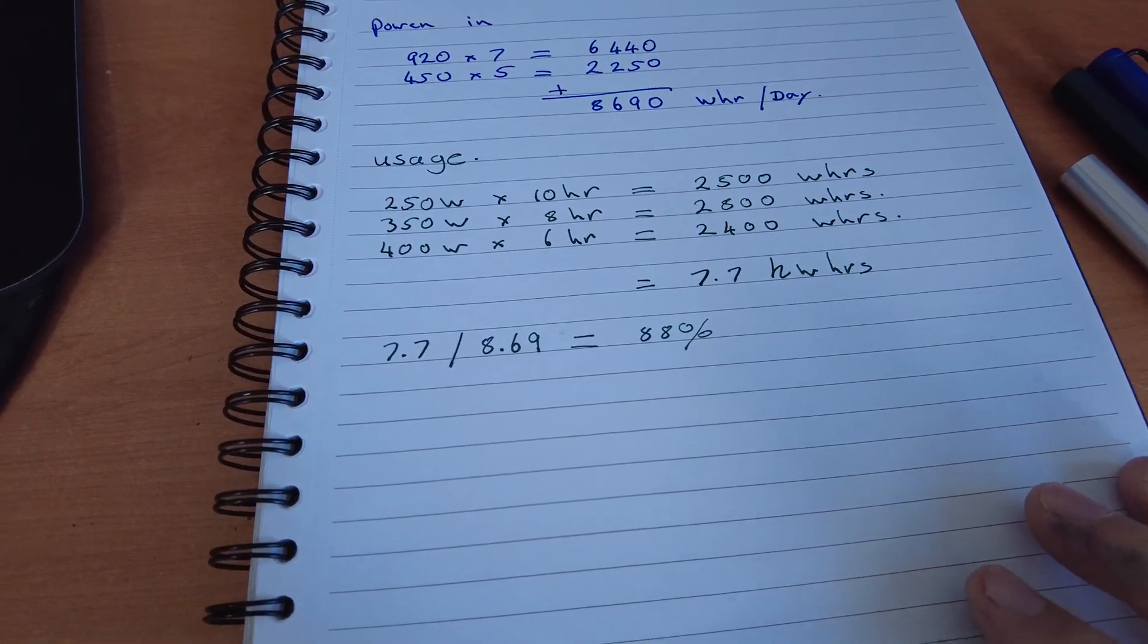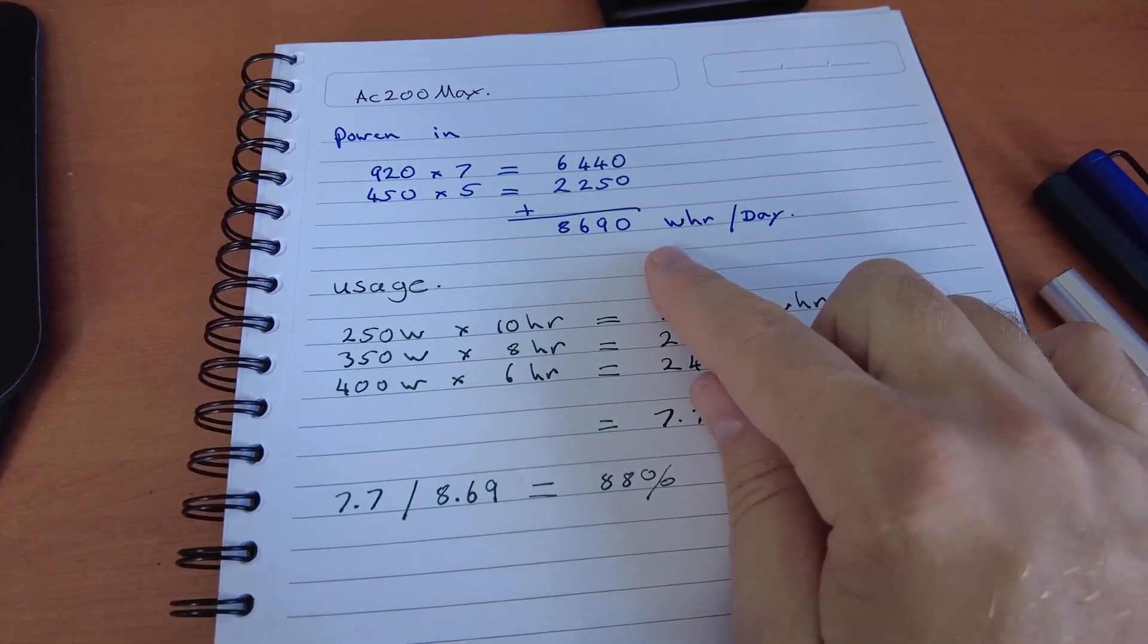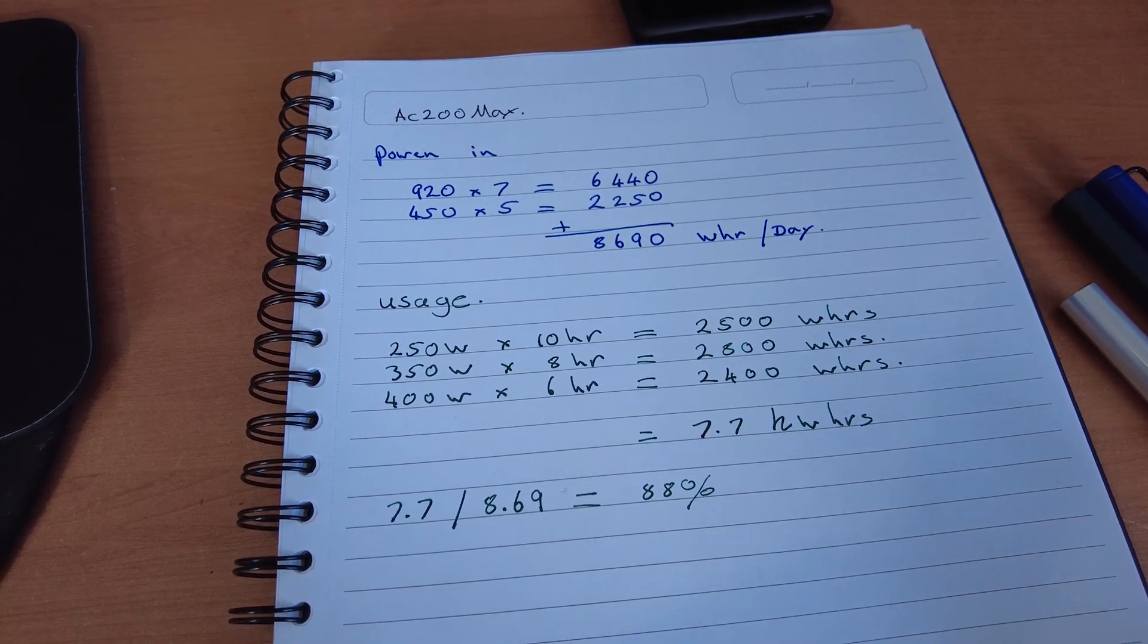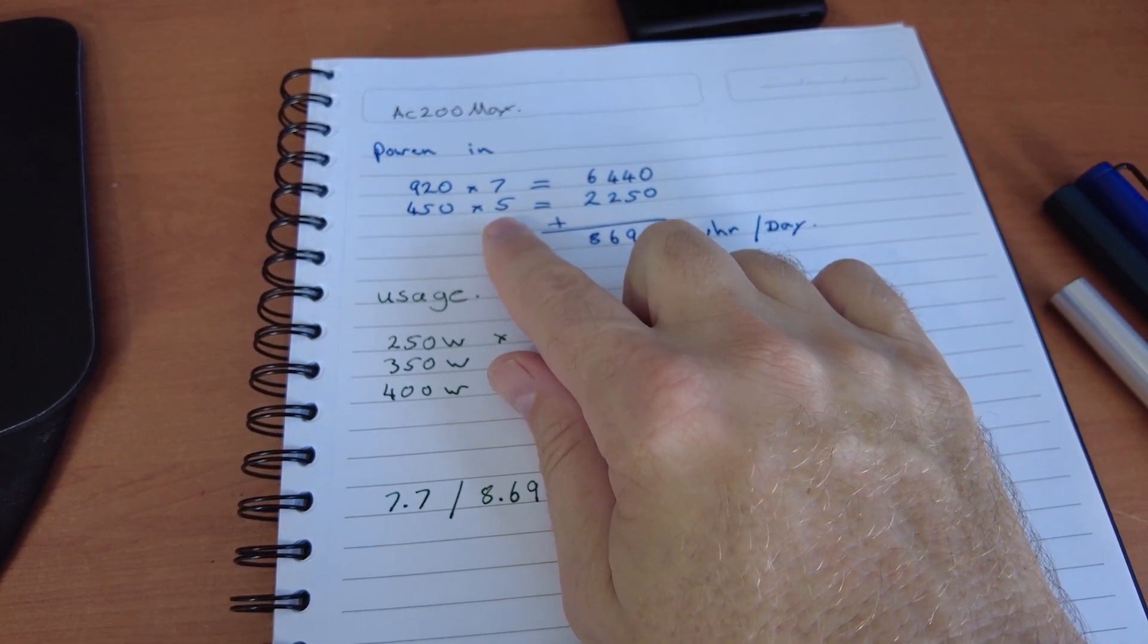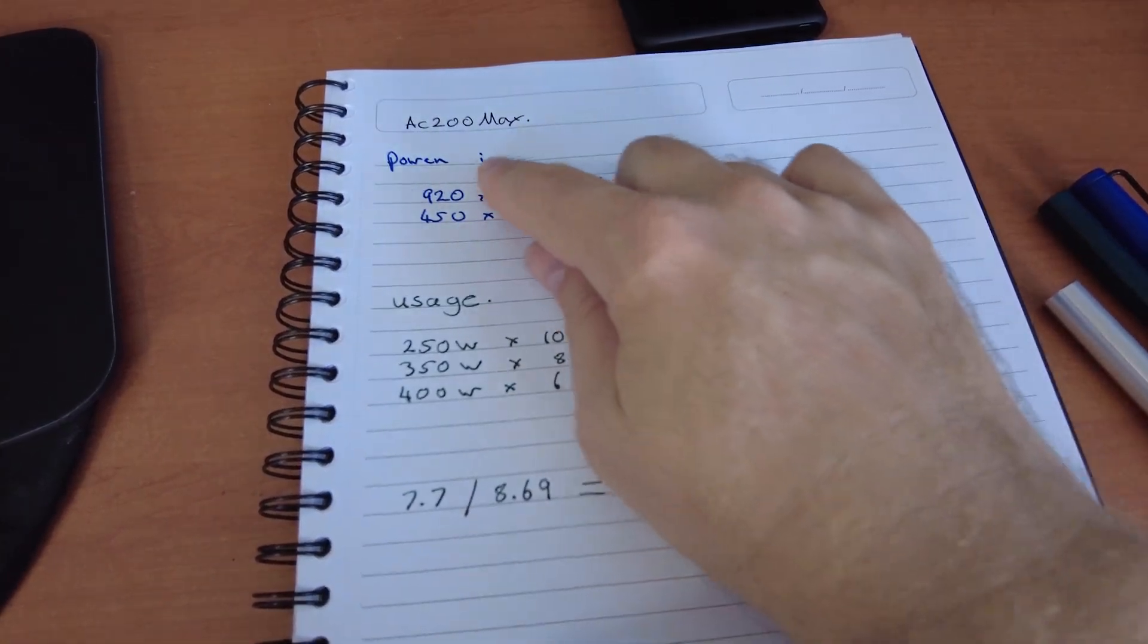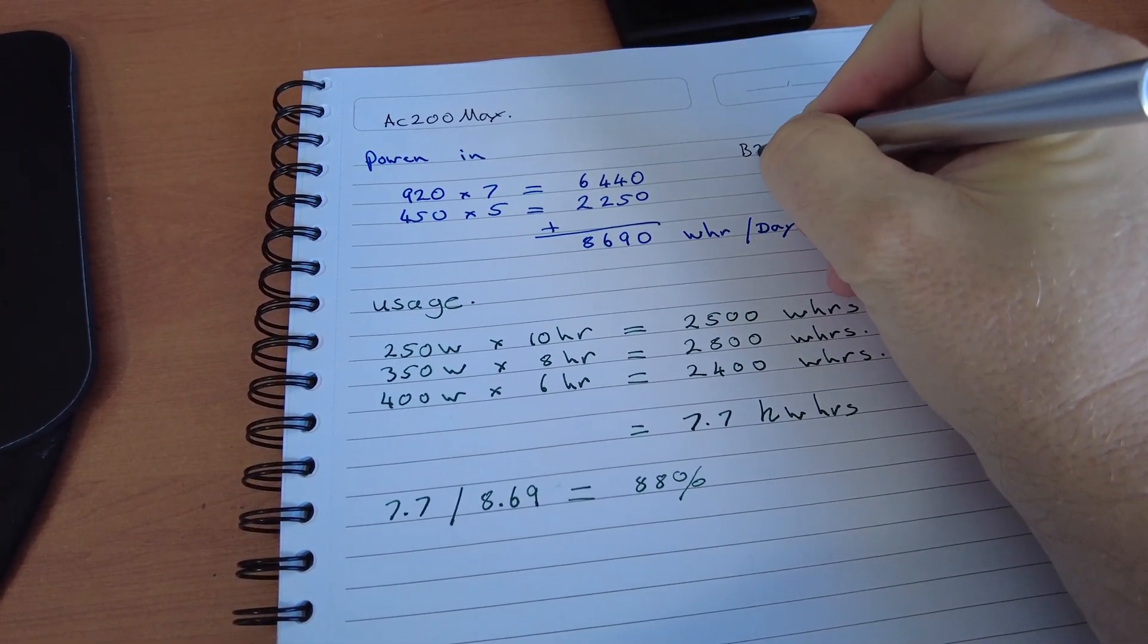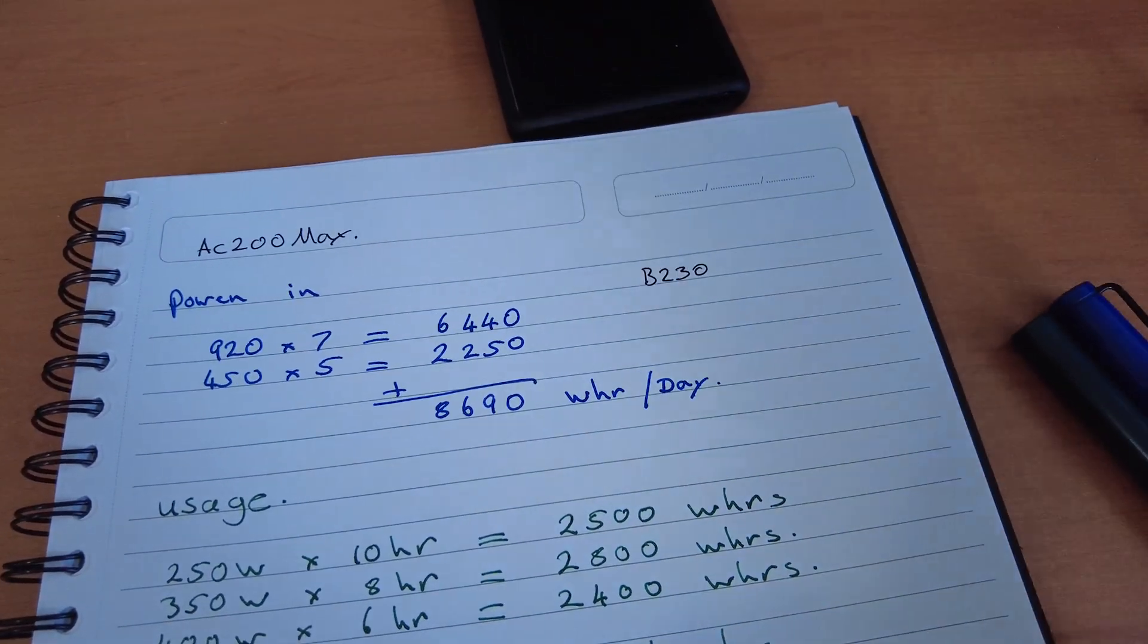Now there is a way where you could add a little bit of capacity to this system. You could possibly over-panel these arrays, and you could then increase the amount of time in the day that you're actually obtaining full charge. So you might be able to bump those up maybe eight to nine hours, and here you might be able to get it up to five or six. But this is just for the head unit. These are the two inputs on the head unit.